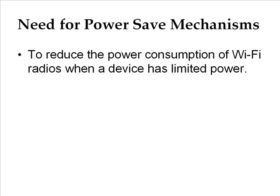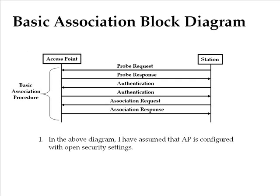This slide briefly describes the basic association state machine of a wireless station with an access point. This is the heart of a WLAN infrastructure — data transfer is only possible if this stage is successful. A station, when powered on, sends a broadcast probe request on all channels it is capable of operating on.